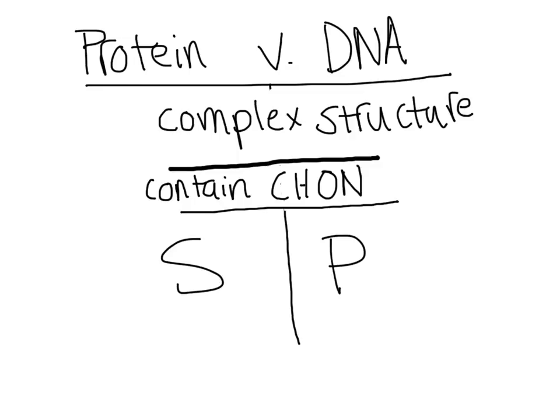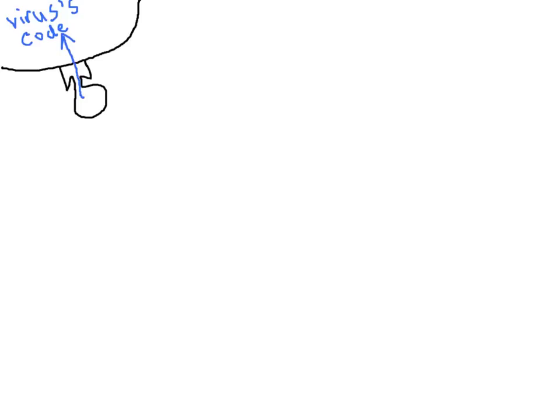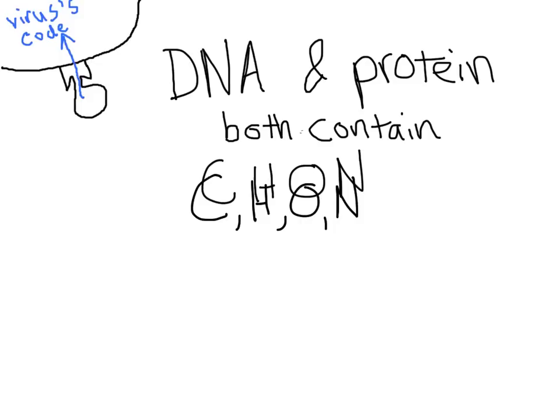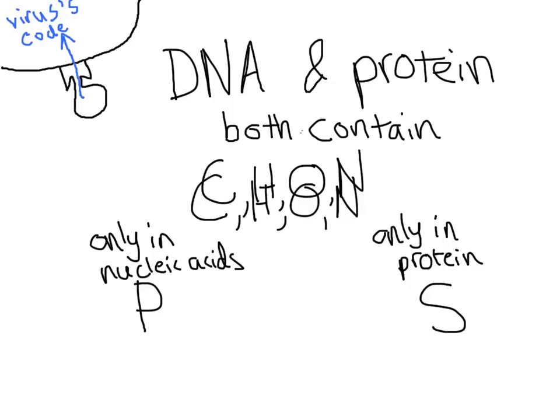They used this to their advantage as they tested for how viruses work. To figure out whether the virus's code was DNA or protein, Hershey and Chase used their basic knowledge of these two macromolecules. The only lucky difference is that DNA contains phosphorus in its phosphate groups, whereas protein contains sulfur that helps hold the complex structures of the protein together. So they decided to use radioactive isotopes of these two elements.